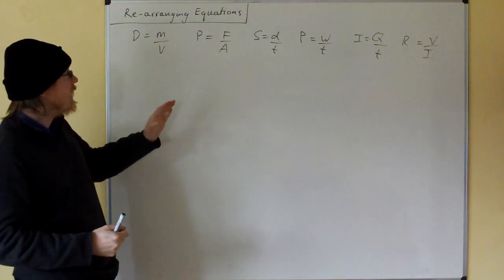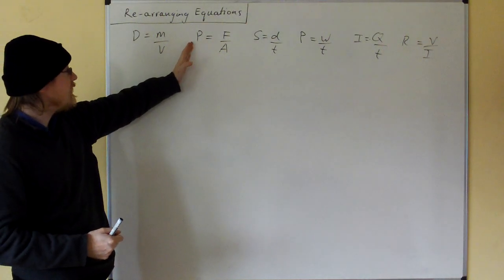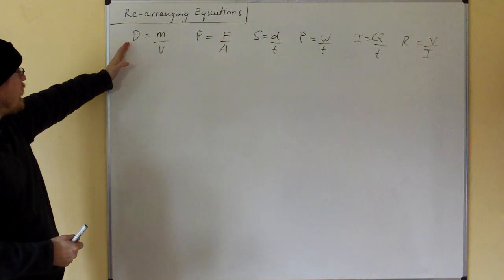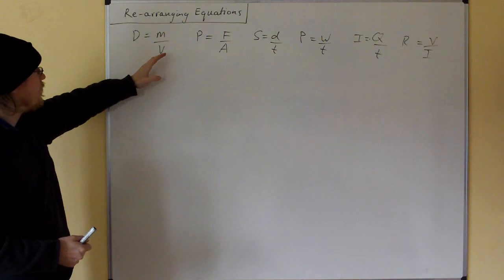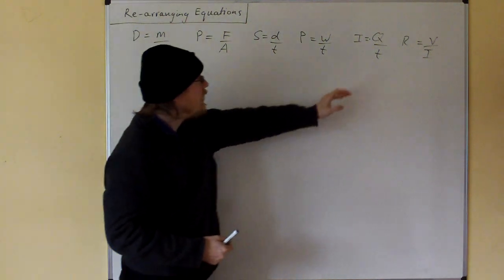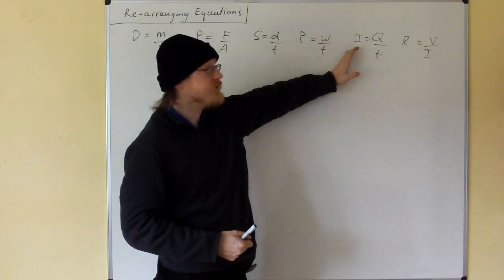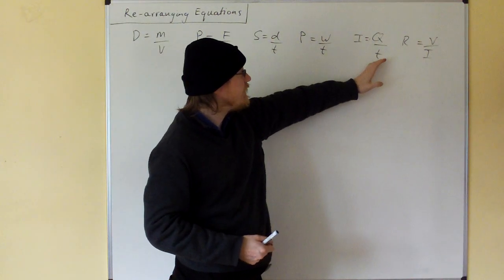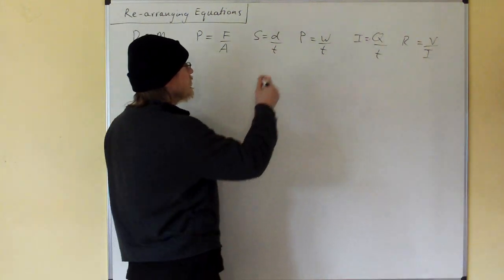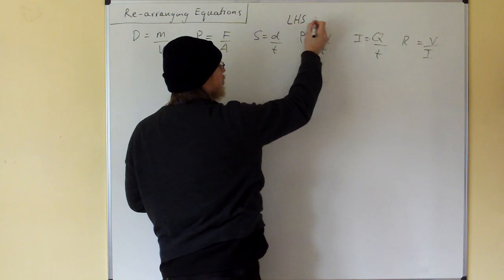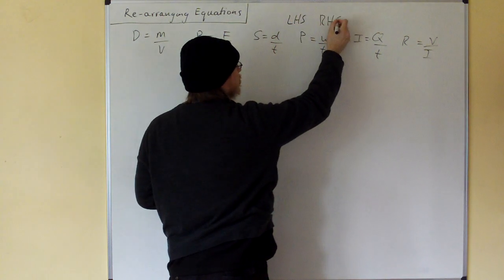Now, equations have two sides. They have a left-hand side and a right-hand side. So we've got density on the left-hand side, mass over volume on the right-hand side. Here we've got current on the left-hand side, charge flowing over time on the right-hand side. So equations have a left-hand side and a right-hand side.